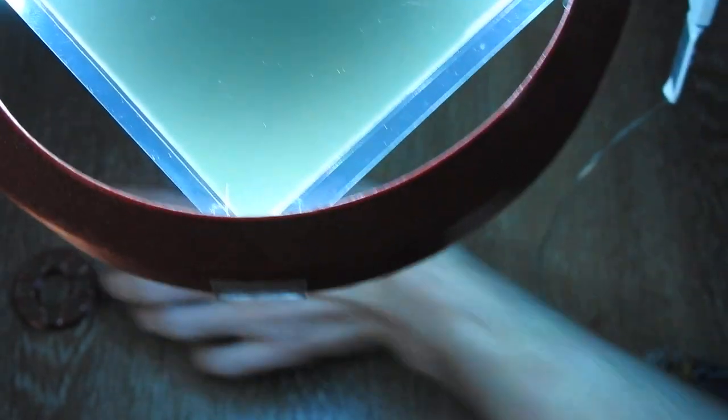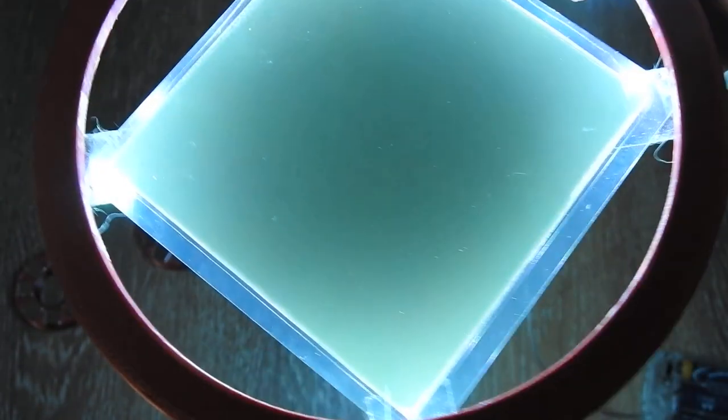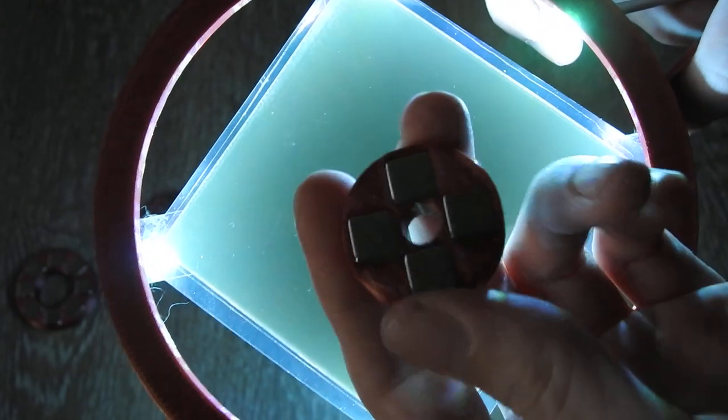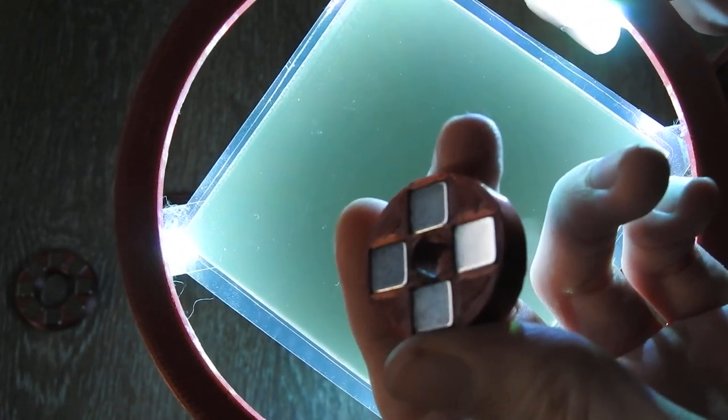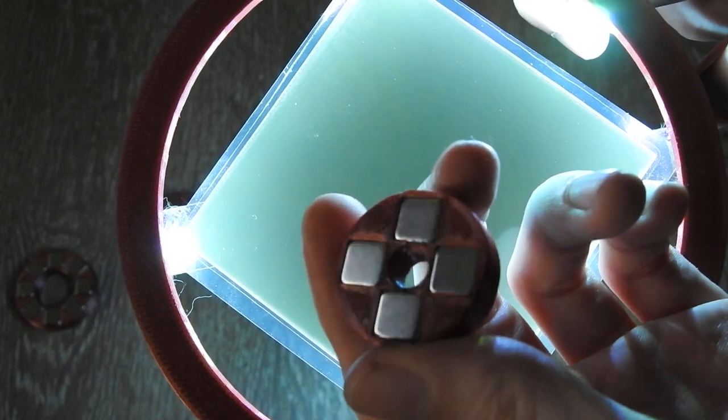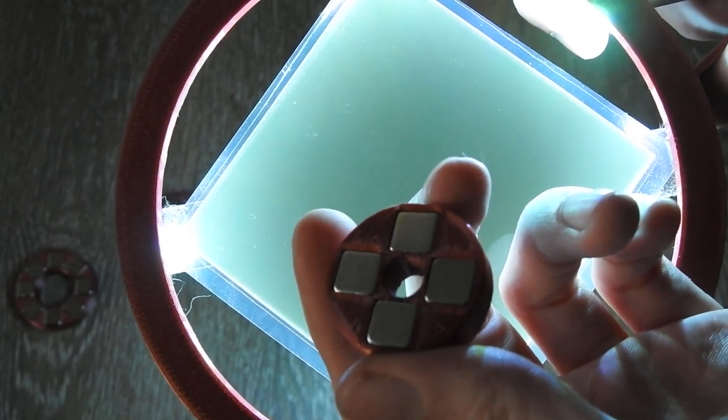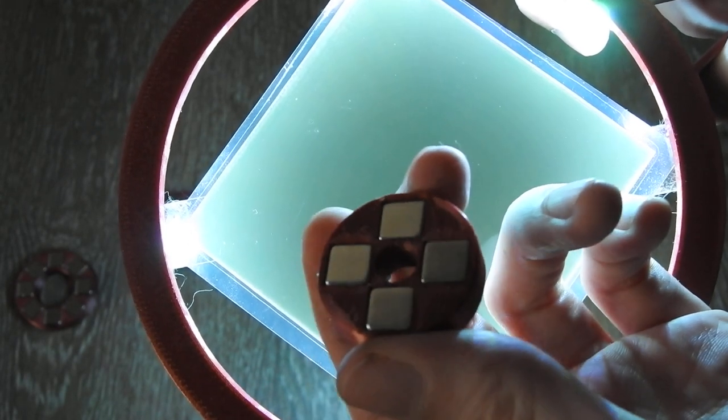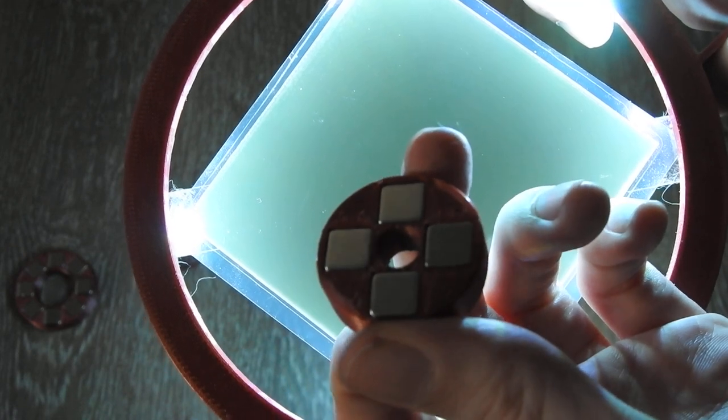But anyways, let's continue to the next array. Here I have a quadrupolar magnet array. These are just four magnets in an alternating north-south direction.